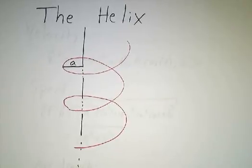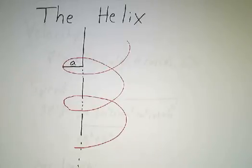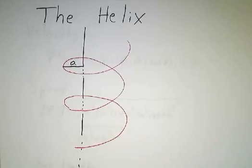As an example of all the machinery of curvature, tangent vectors, principal normal vectors, binormal vectors, and all the rest, we're going to work out essentially all of the quantities of interest for a helix.